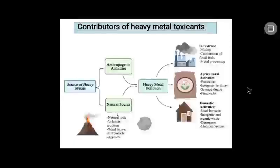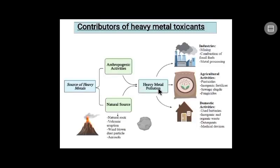The contributors of heavy metal toxicants are shown in this figure. Anthropogenic activities and natural sources — including natural rock, volcanic eruption, wind-blown dust particles, and aerosols — are sources of heavy metals. Their excess causes heavy metal pollution through industrial processes like mining, combustion of fossil fuels, and metal processing; through agricultural activities like pesticides, inorganic fertilizers, sewage sludge, and fungicides; and through domestic activities like use of batteries, inorganic and organic waste, detergents, and medical devices.